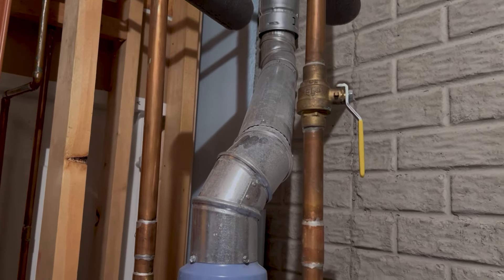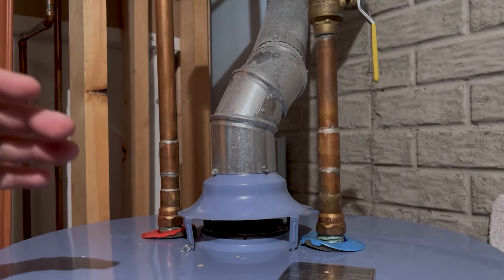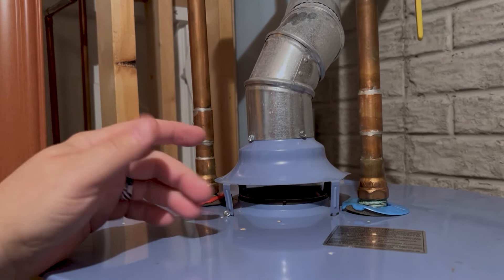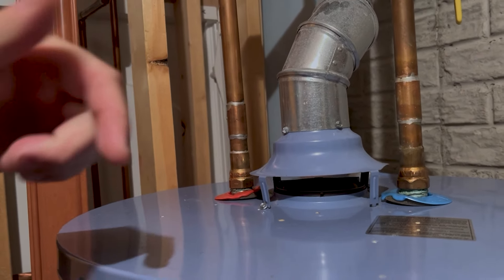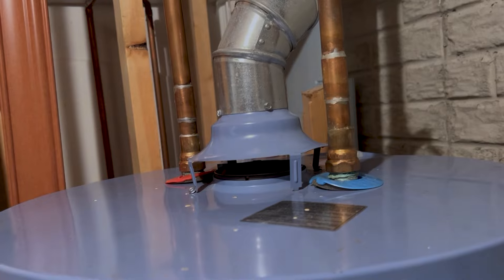We'll have a picture of what the outside looks like here. Basically what happens with backdrafting is that those exhaust gases aren't getting pushed all the way up through that pipe like it's supposed to. Some of it's getting pushed back into the house, and those exhaust gases do contain carbon monoxide.